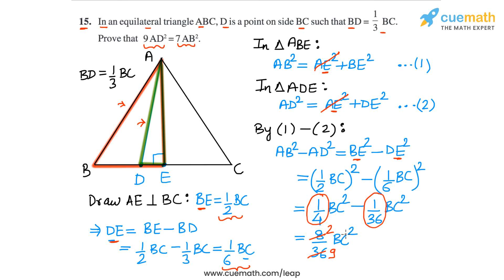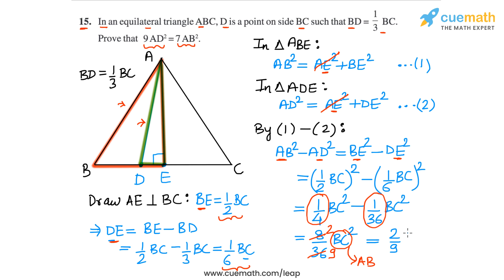Since triangle ABC is equilateral, BC equals AB. We want a relationship between AB and AD only, so let's replace BC with AB. The right-hand side becomes two-ninths of AB². So we have AB² minus AD² equals two-ninths of AB².